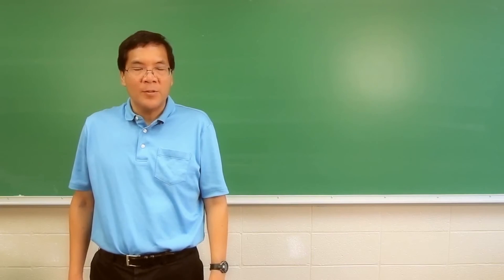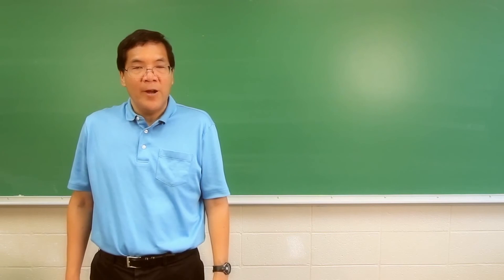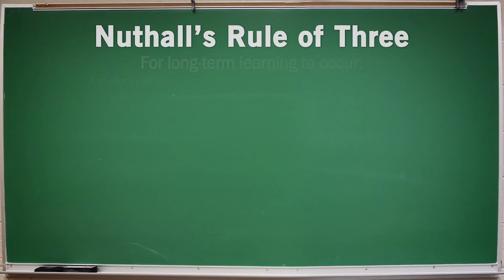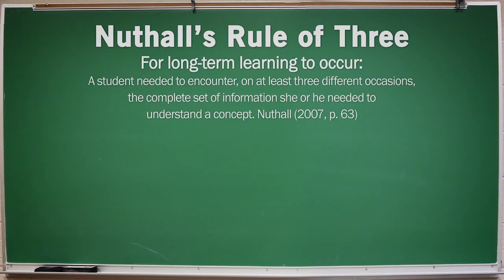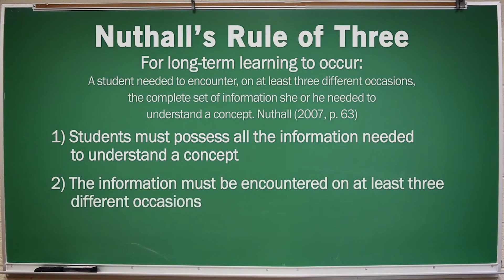Teachable moments make learning possible, but our goal is for students to learn information for the long term. What does it take to make long-term retention possible? Graham Nuthall has studied this question extensively, and he's developed what I call Nuthall's Rule of Three. It says that for long-term learning to occur, a student needed to encounter, on at least three different occasions, the complete set of information she or he needed to understand the concept. First, students must possess all the information needed to understand the concept — if information is incomplete, either through omission by the teacher or lack of attention by students, then students won't learn. Second, the information must be encountered on at least three different occasions. One good encounter is not enough. These encounters can be brought about by the teacher in class or by students studying outside of class. Three is a minimum.